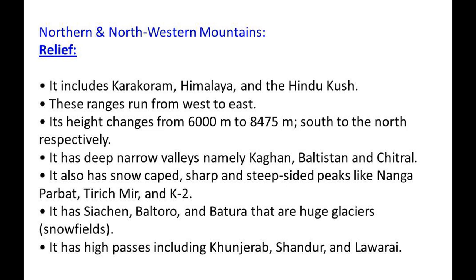The Northern and Northwestern Mountains also have snow-capped, sharp and steep-sided peaks like Nanga Parbat, Tirich Mir and K2. There are huge glaciers and snow fields including Siachen and Baltoro. The area has high passes including Khunjerab, Shandur and Lowari.